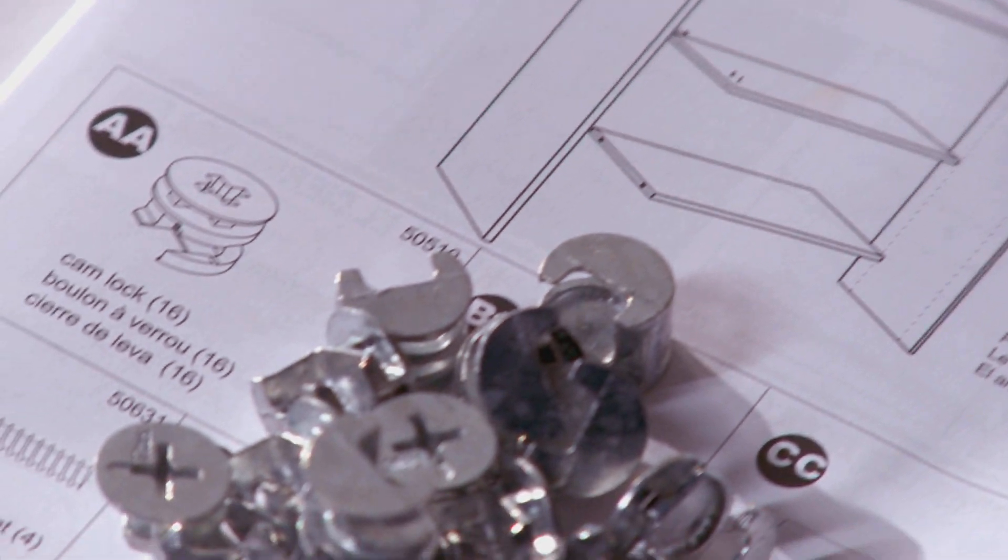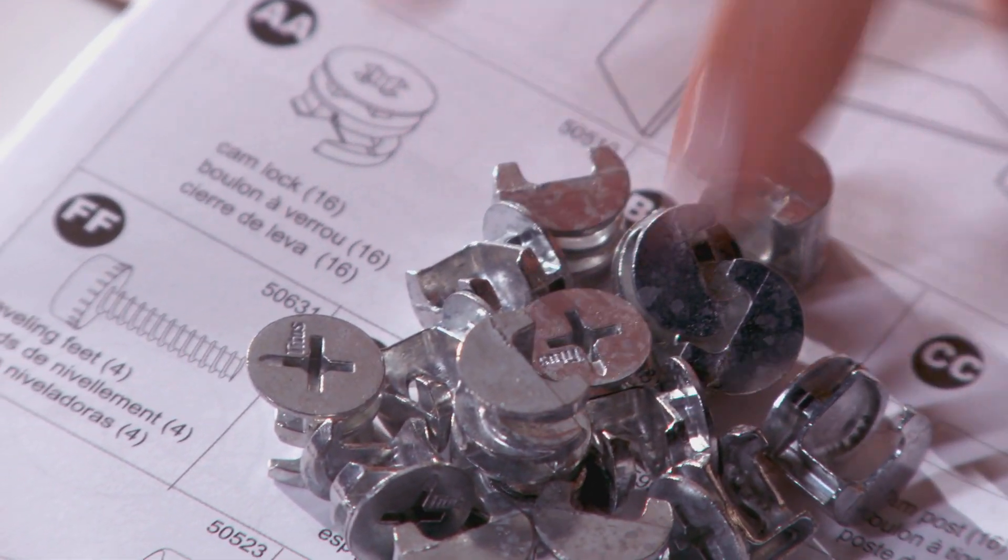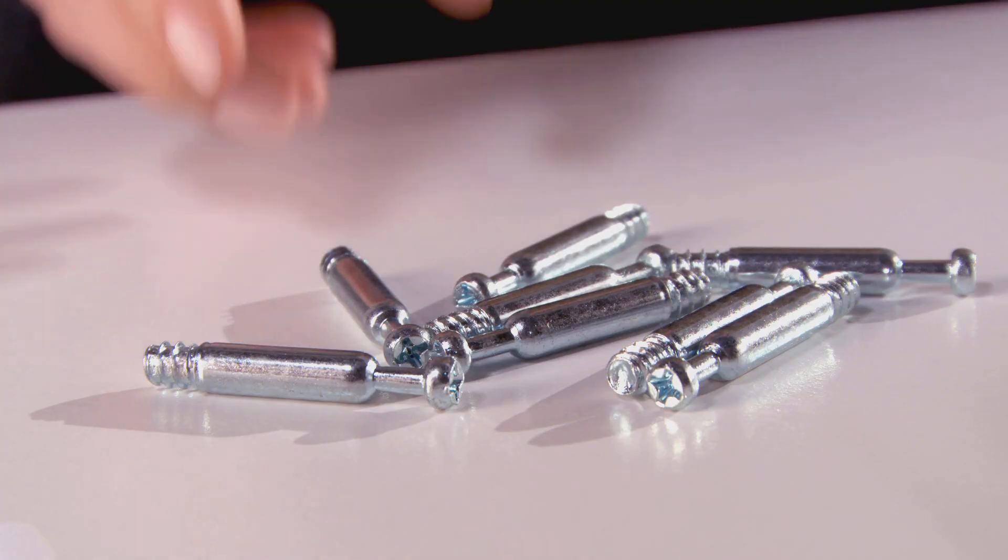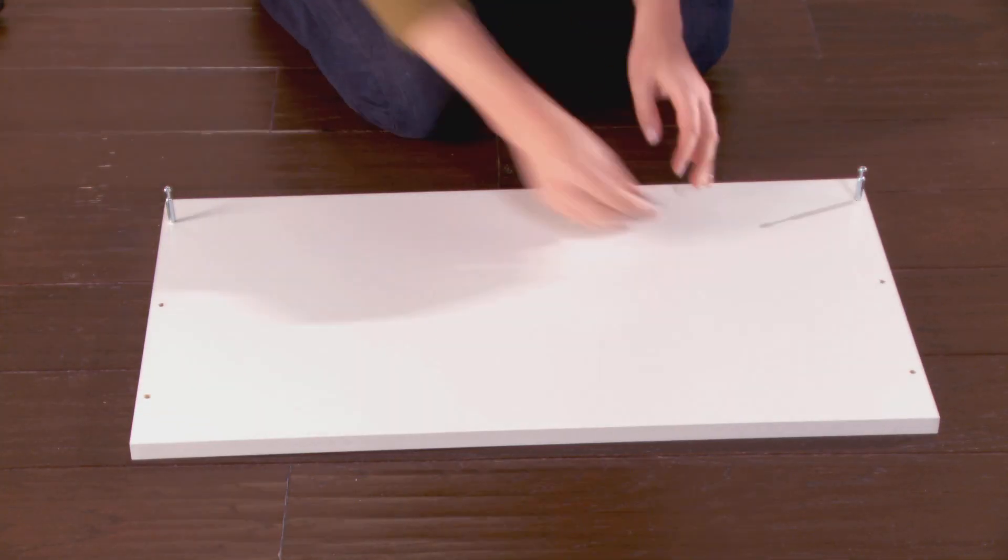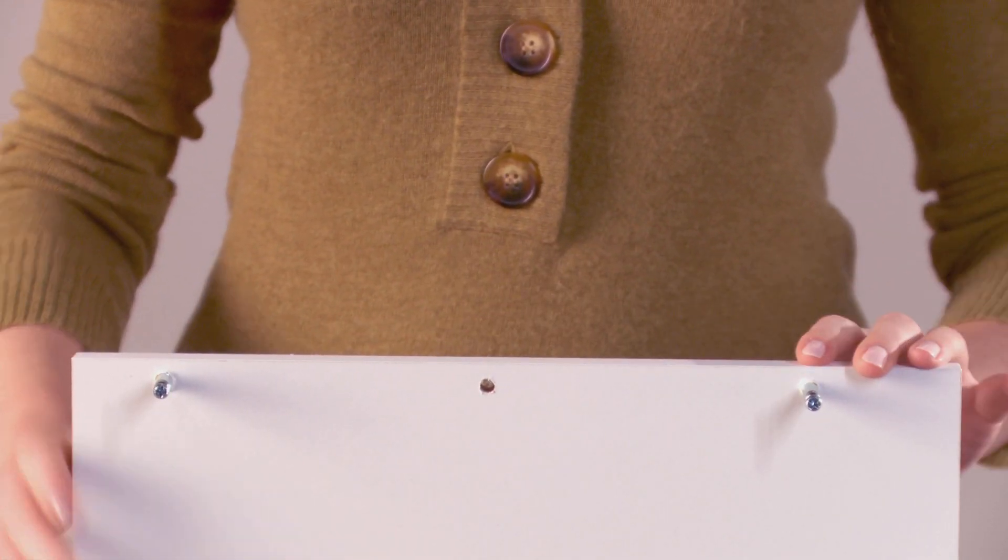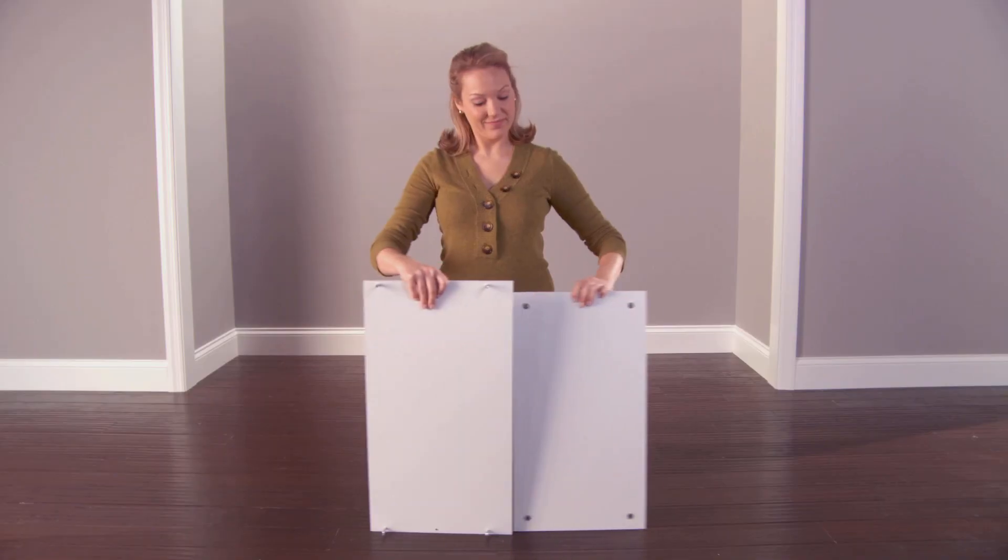You will want to build the tower first. Take the cam locks and push them into each of the bottom shelves. Screw the cam posts into the corner holes on each of the top shelves. The top shelves have six small holes and are larger than the other shelves.